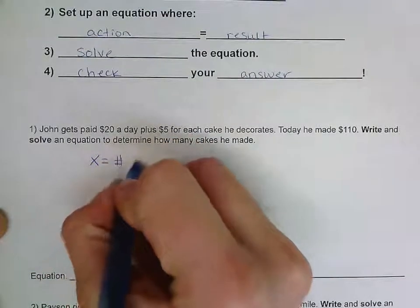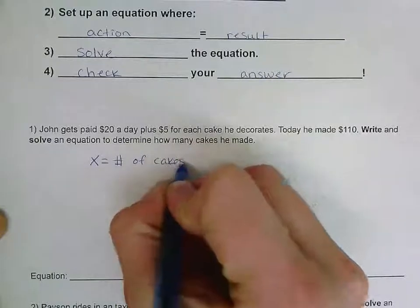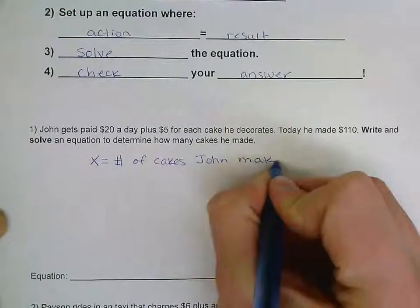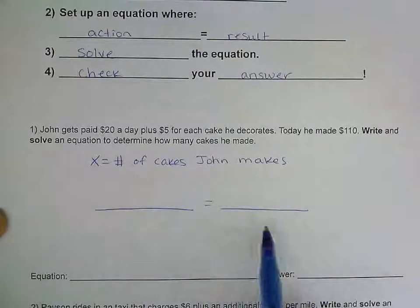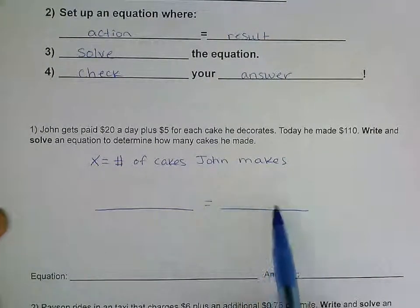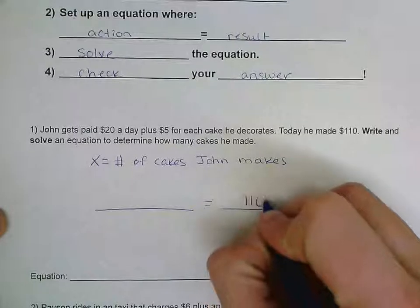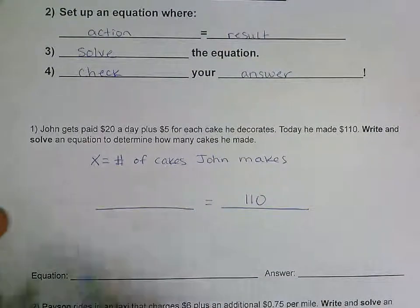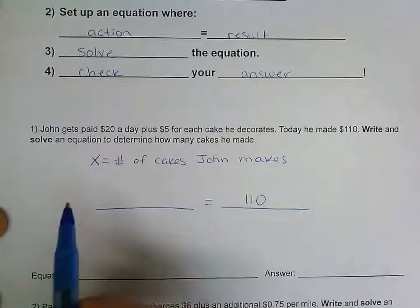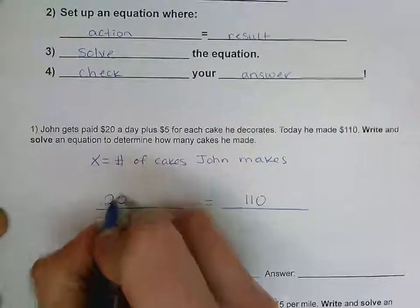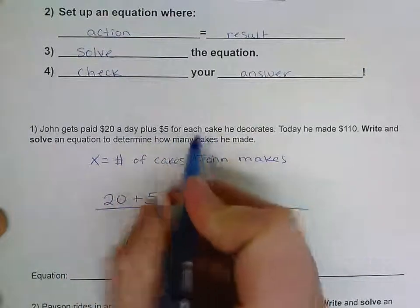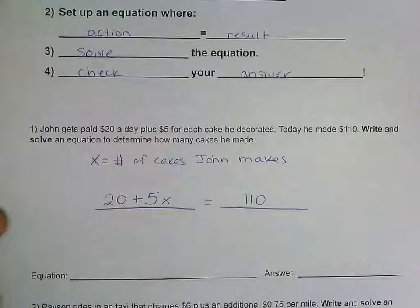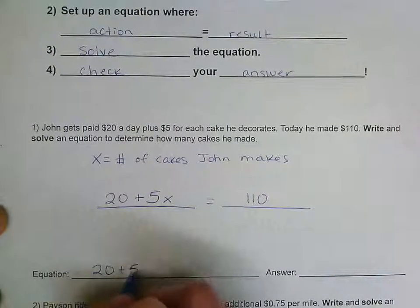So X is going to represent the number of cakes that John makes. Next we write our equation with an action on one side and a result on the other. It's easy to spot the result — today he made $110, so that's our result on the right side. On the left side we ask how he got that $110: he's paid $20 just for showing up, plus $5 for each cake he makes, so that's 5 times the number of cakes.